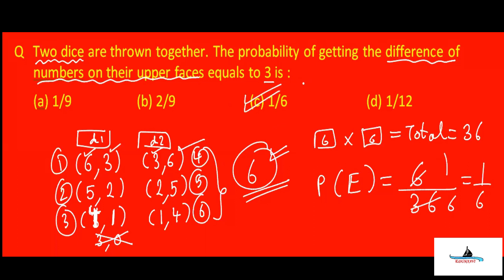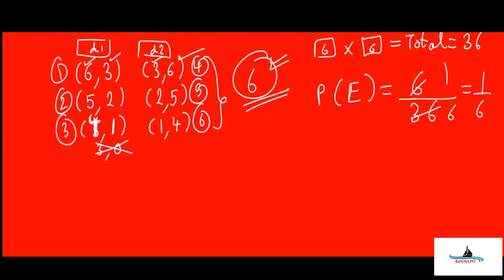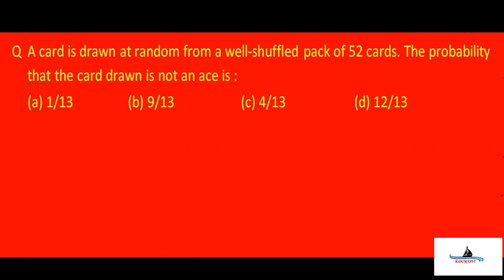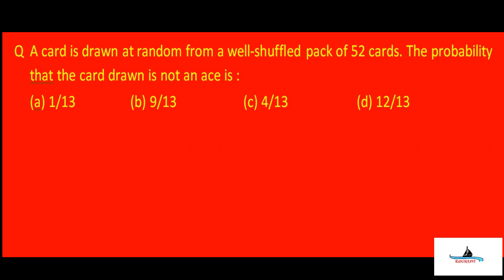Now let us come to the second question. A card is drawn at random from a well-shuffled pack of 52 cards. Well-shuffled means there is no partiality. The question asks for the probability that the card drawn is not an ace. Pay attention — it says not an ace.